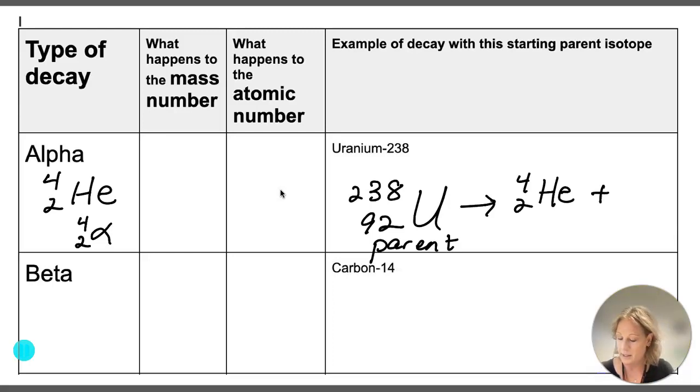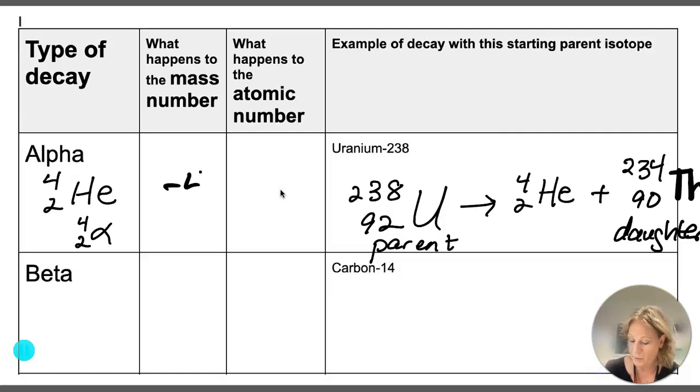And then that results in a daughter isotope that is going to have a mass number less than 4 than what it started with, and the atomic number is less than 2 of what it started with. So really the mass number is going down by 4, atomic number goes down by 2.